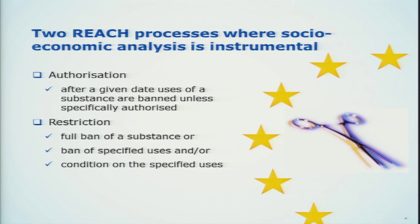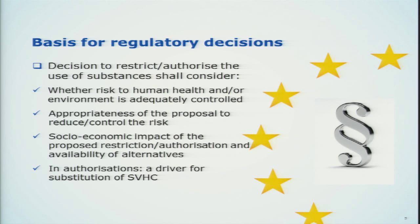There are two REACH processes where socioeconomic analysis plays a vital role. Authorization is the process where, after a given date, uses of substances listed in Annex 14 of REACH are banned unless specifically authorized. Restriction is the European-wide ban of a substance or specific uses, or conditions on specific uses. As a basis for regulatory decisions, REACH stipulates that we evaluate whether the risk for human health and/or the environment is adequately controlled, the appropriateness of proposals to reduce and control risk, the socioeconomic impacts, and for authorization, a driver for substitution of substances of very high concern.